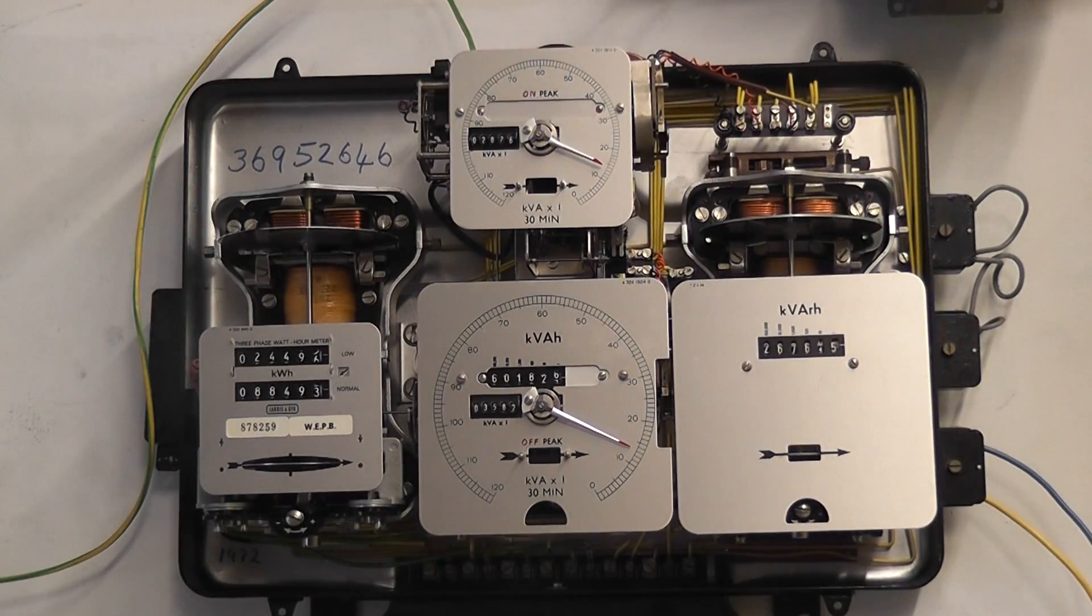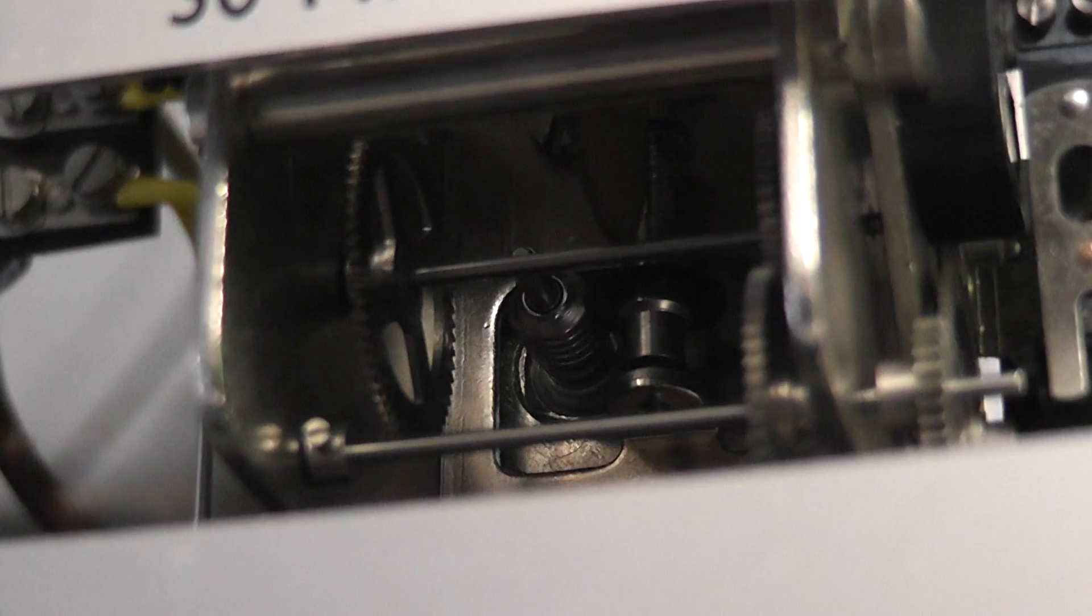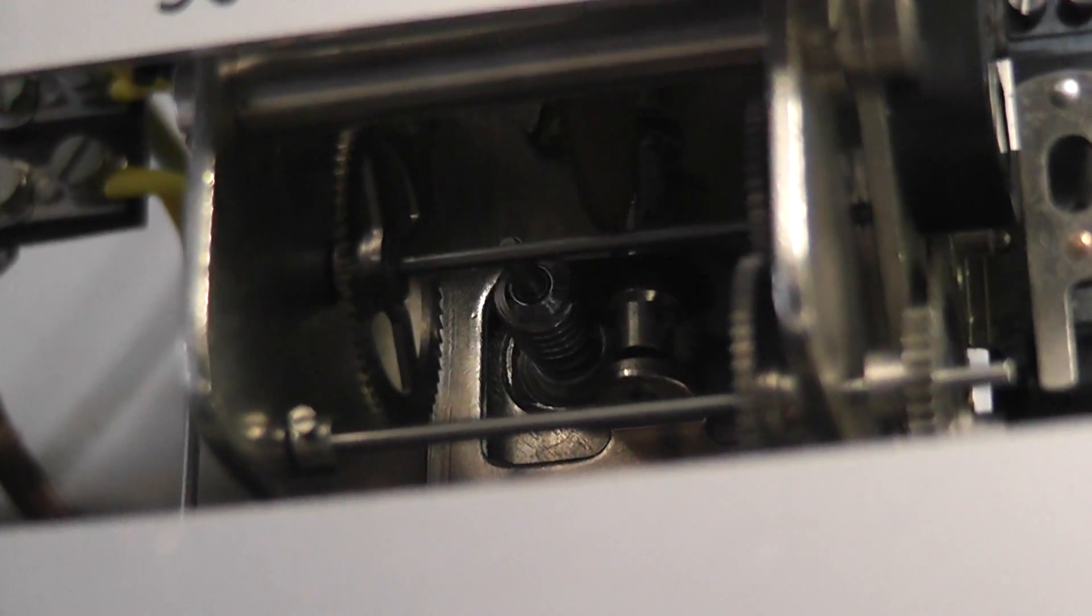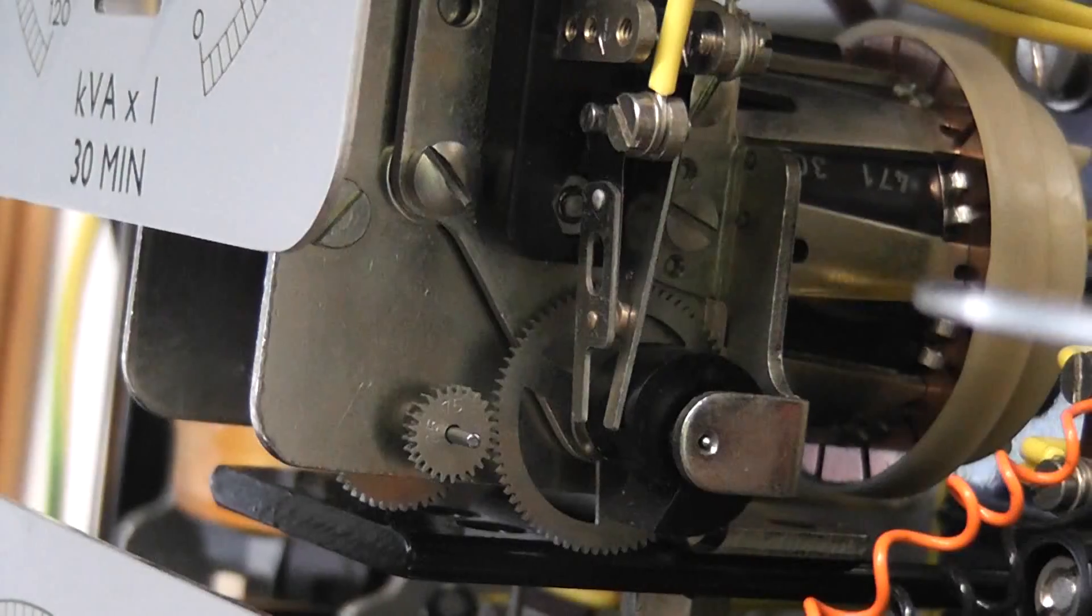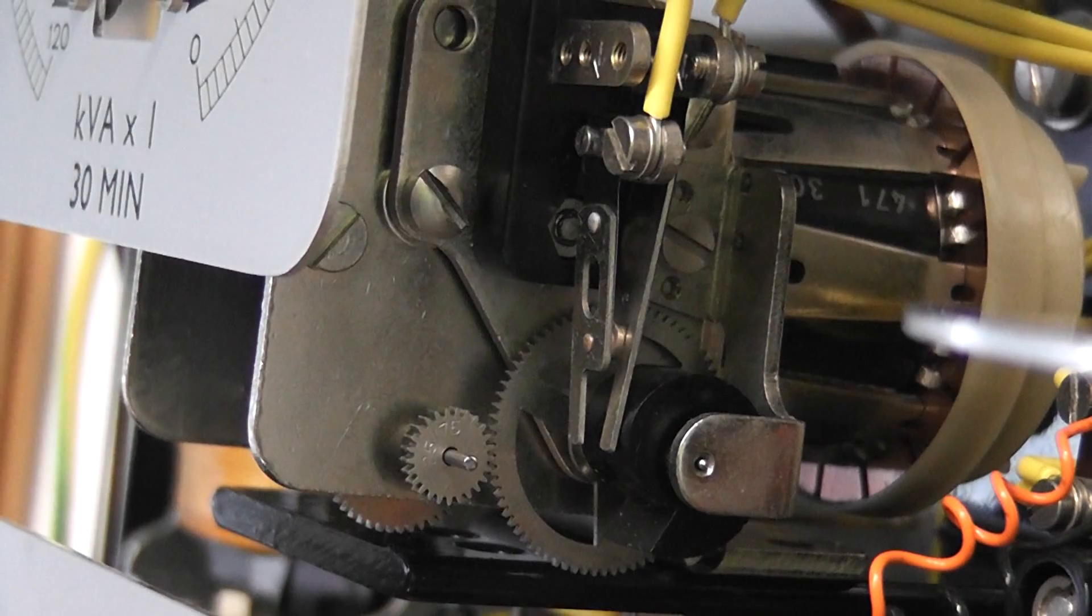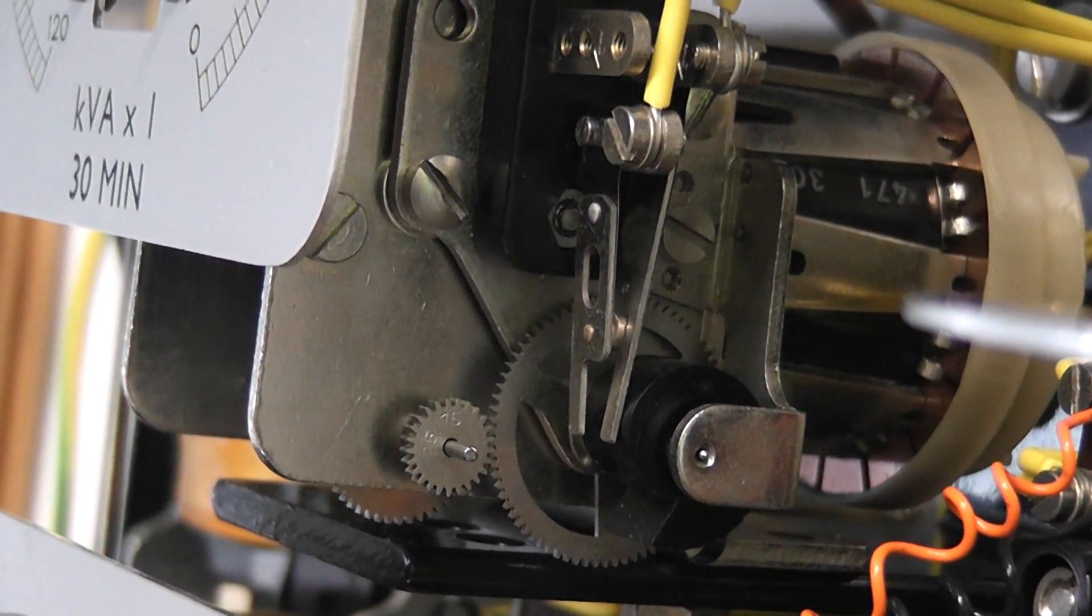Meter cover is being removed. You can see the timing motor. This is the cam and lobe for the reset every 30 minutes for the maximum demand registers.